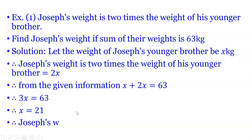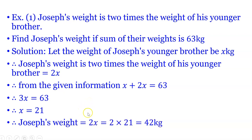Hence Joseph's weight is equal to 2x, that is 2 into 21, which is equal to 42 kg.